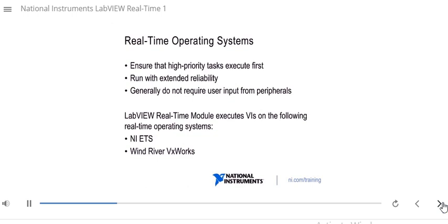A real-time operating system, on the other hand, was built for real-time response. If you're using an RTOS, it will ensure that high-priority tasks execute first. You can define the priorities of different tasks, and the RTOS will execute them accordingly. The RTOS also runs with extended reliability because it has a minimal set of software installed. Generally, a real-time operating system does not require user input from peripherals — it doesn't necessarily need a mouse or keyboard connected. The LabVIEW Real-Time module executes VIs on the following real-time operating systems running on an RT target: NI ETS and Wind River VxWorks.